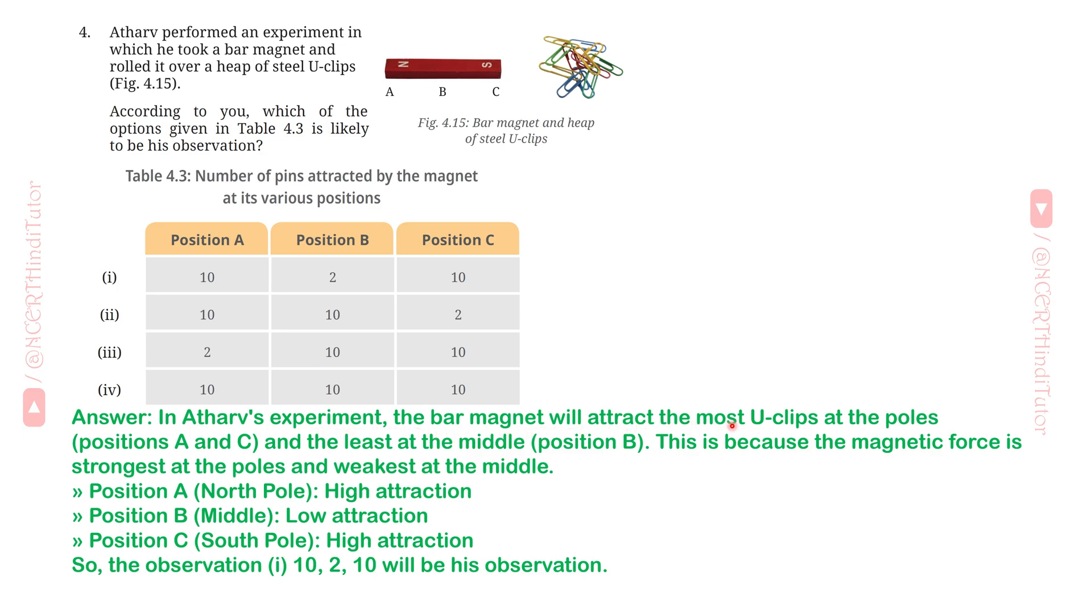Answer: In Atharv's experiment, the bar magnet will attract the most U-clips at the poles, positions A and C, and the least at the middle, position B. This is because the magnetic force is strongest at the poles and weakest at the middle. Position A: North Pole, High Attraction. Position B: Middle, Low Attraction. Position C: South Pole, High Attraction.